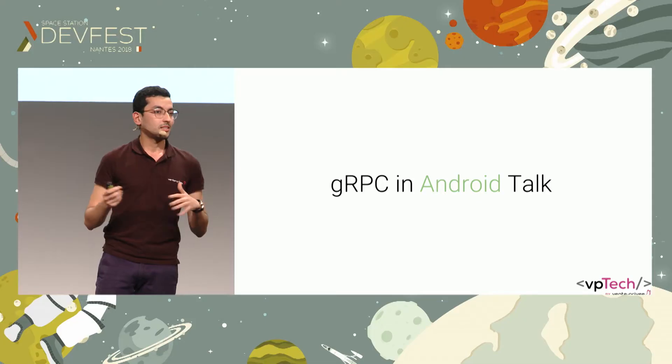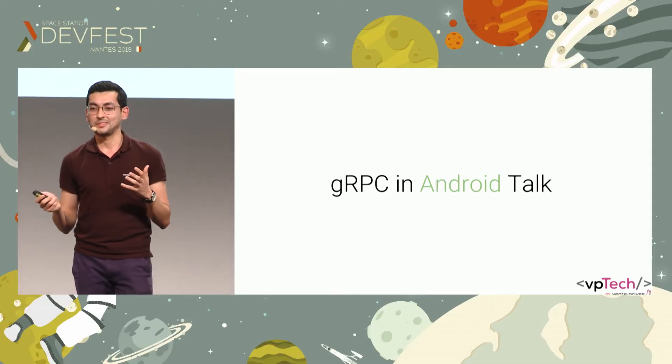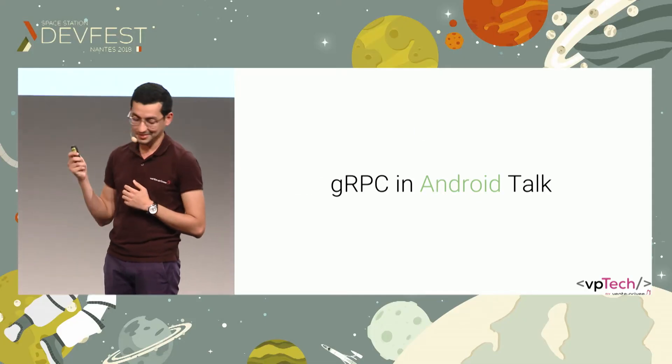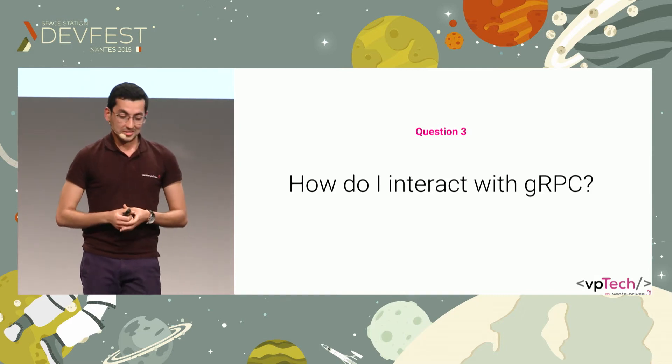That's a way of communicating and making calls to your API. And you can think of gRPC as something like that — it's like doing networking. But then, how do I interact with gRPC?